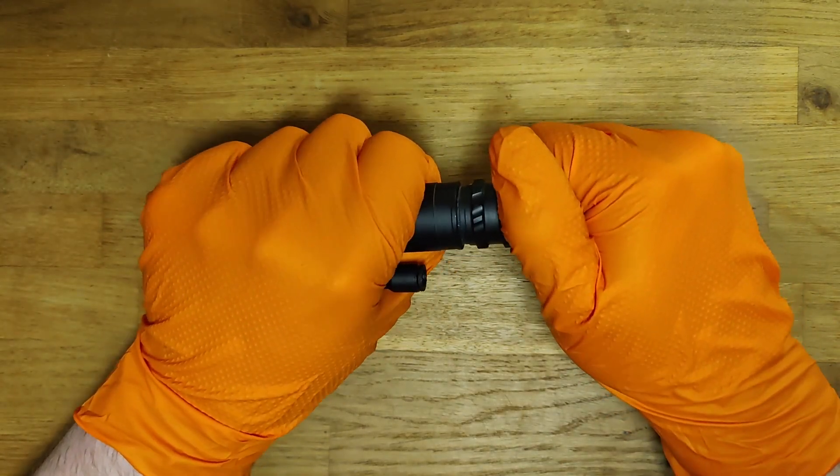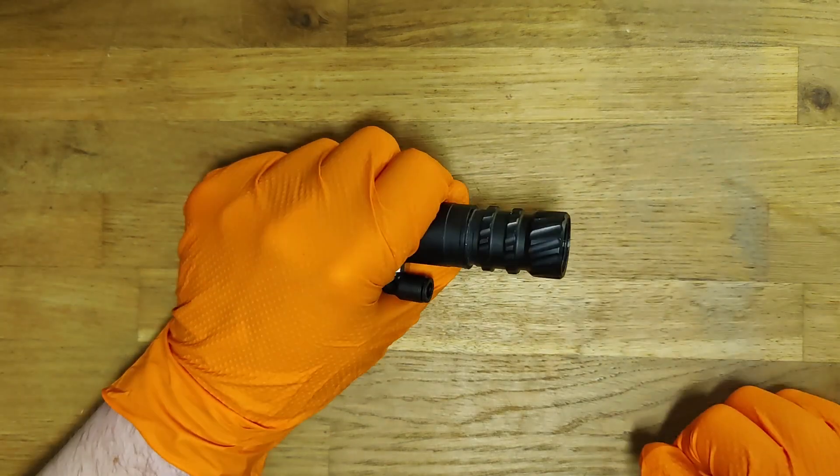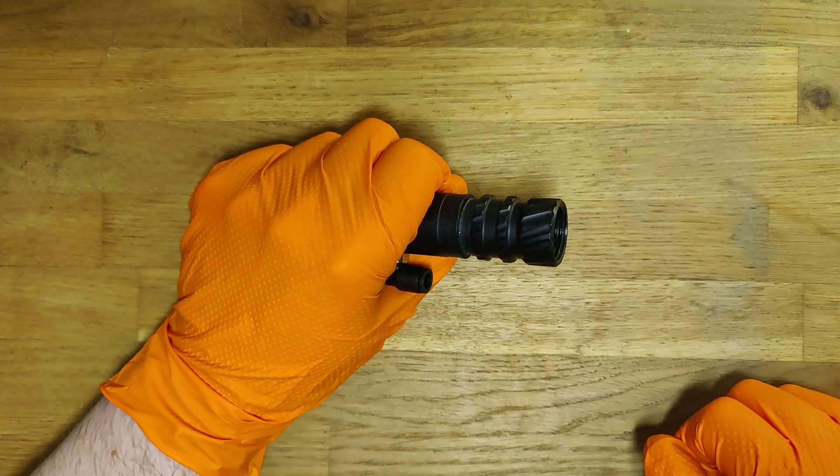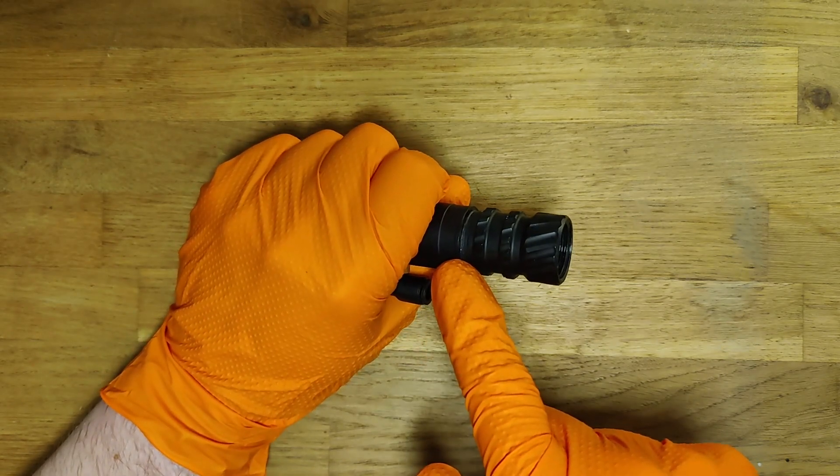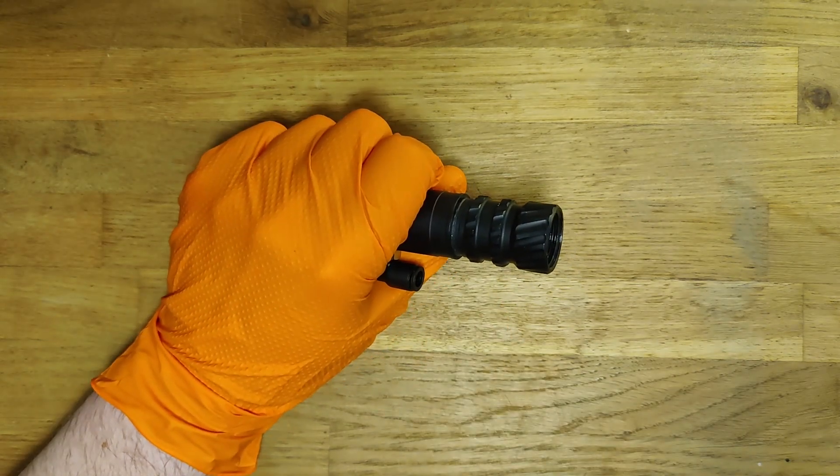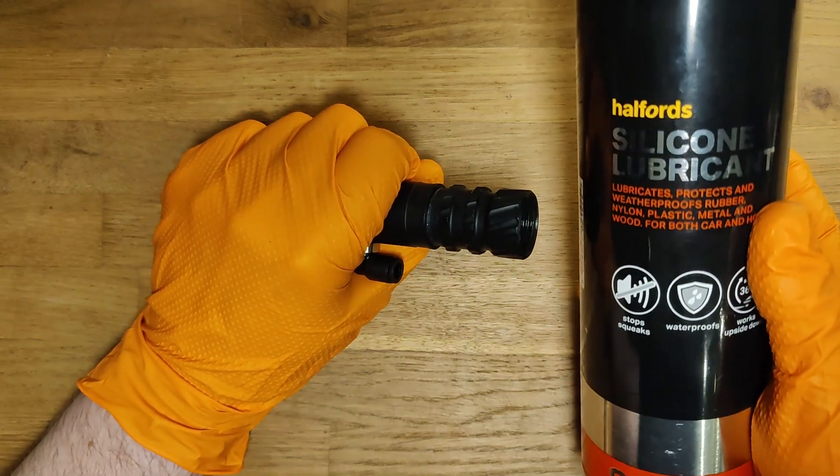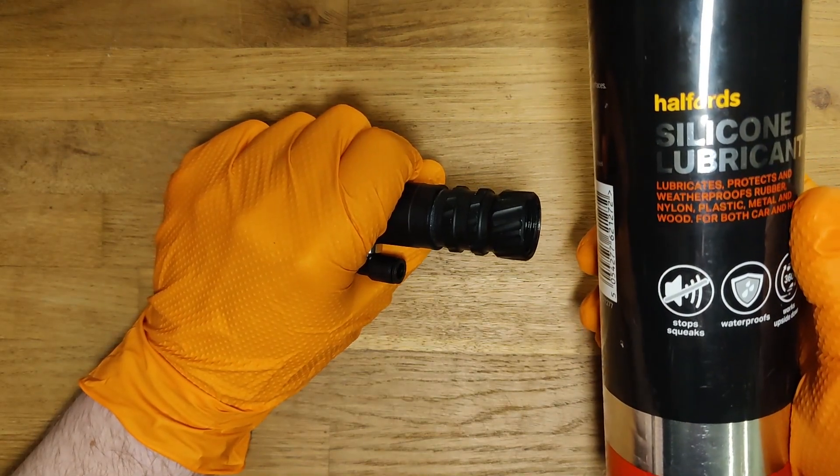If it's hard for you to unscrew it, you can put some light oil or WD-40 directly on the thread between the top and bottom section. I'm using silicone lubricant, but it can be WD-40 as well.